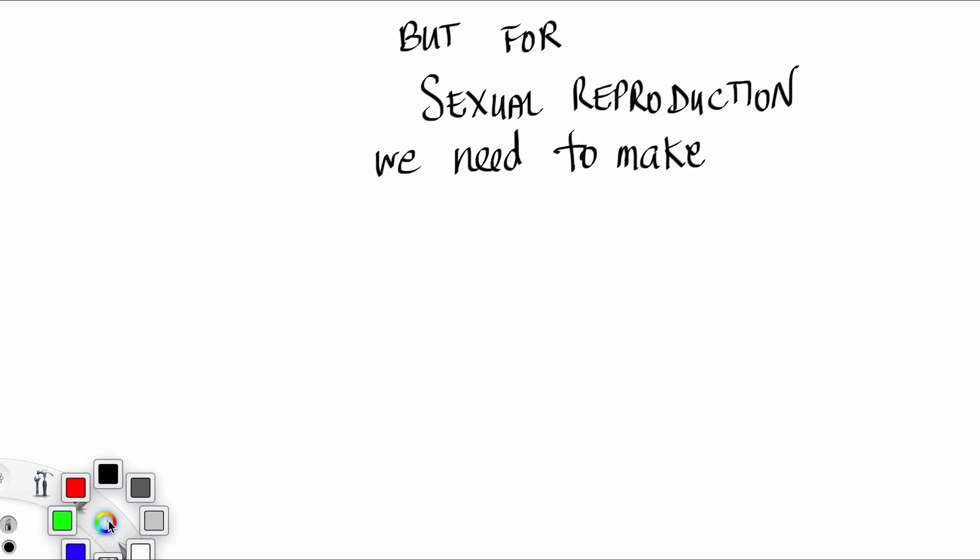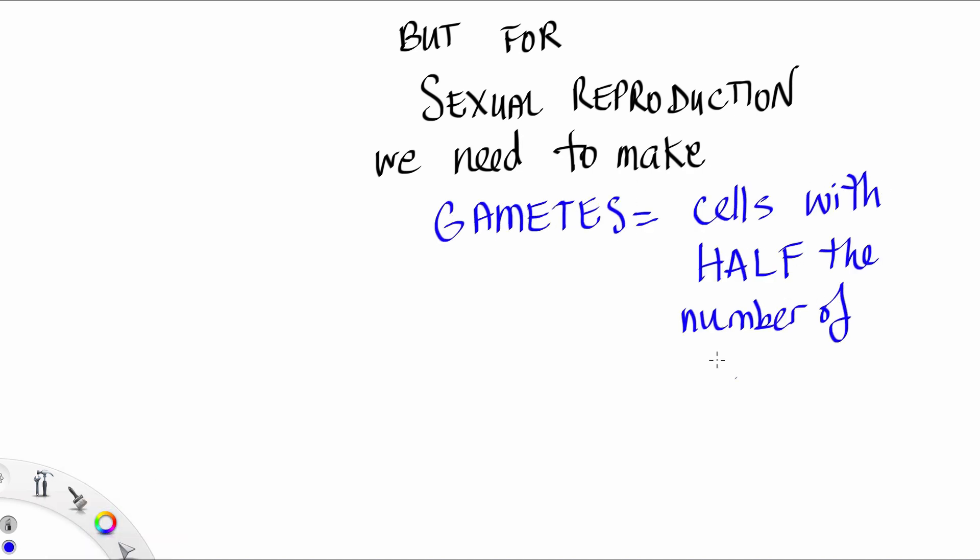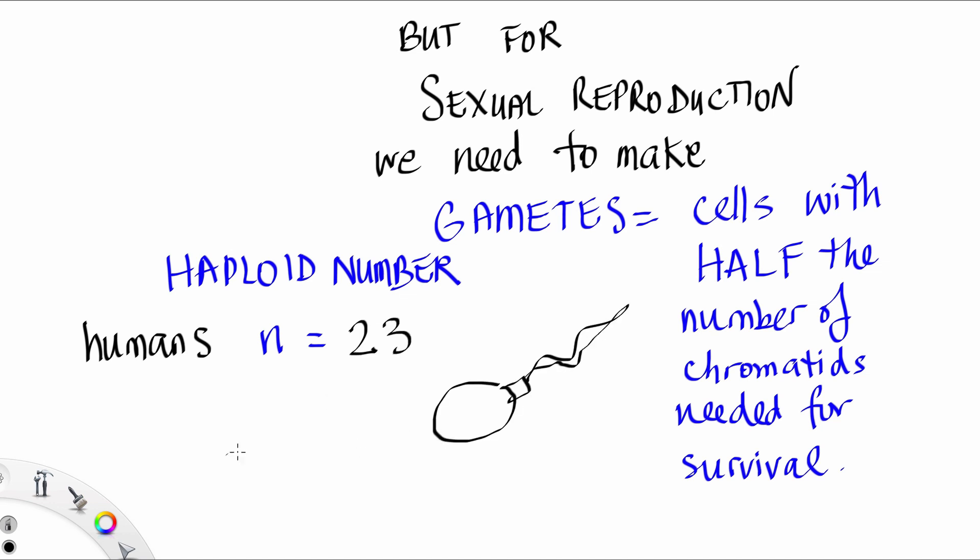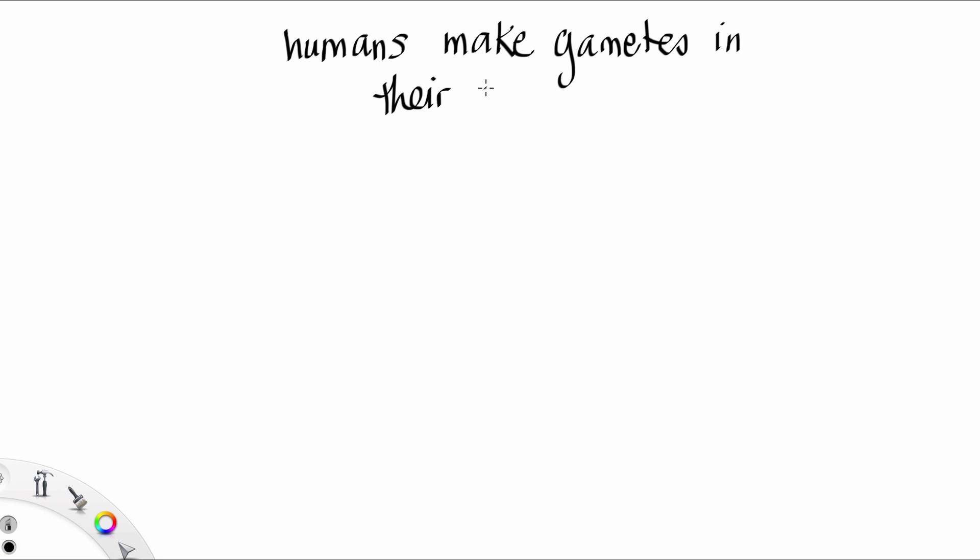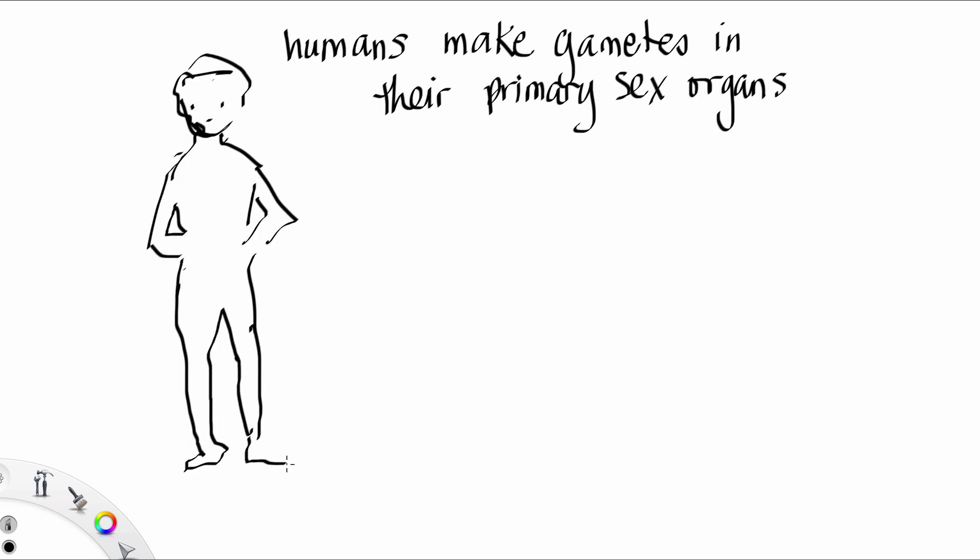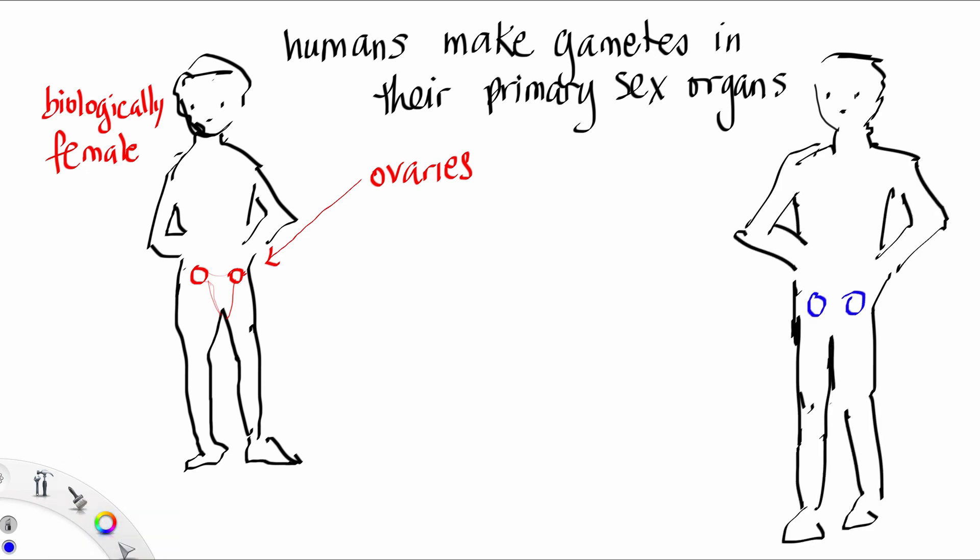But for sexual reproduction, we need to make gametes, cells with half the number of chromatids needed for survival. And this number is called the haploid number. For humans, it's 23. This is so we can have a fertilization event. Humans make gametes in their primary sex organs. For those who are biologically female, it's the ovaries, and for those who are biologically male, it is their testes.